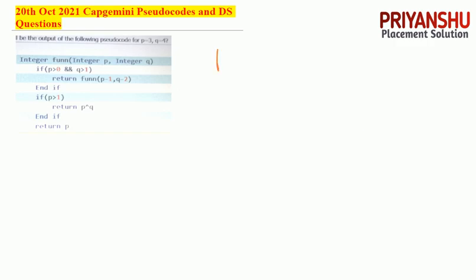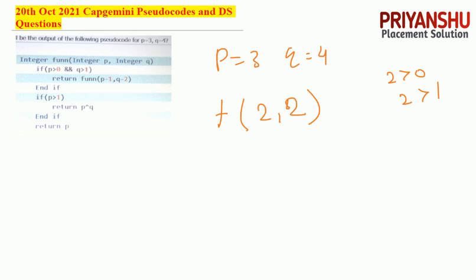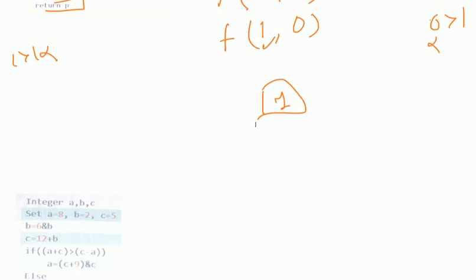This is another recursion-based question with p = 3 and q = 4. p greater than 0 — yes; q greater than 1 — yes, both conditions true. Pass p - 1 = 2 and q - 2 = 2 again. p greater than 0 — yes; q greater than 1 — yes again. Next call: p = 0, q = 0 — p greater than 0 is false; then check p greater than 1 — false, so return p which is 1.